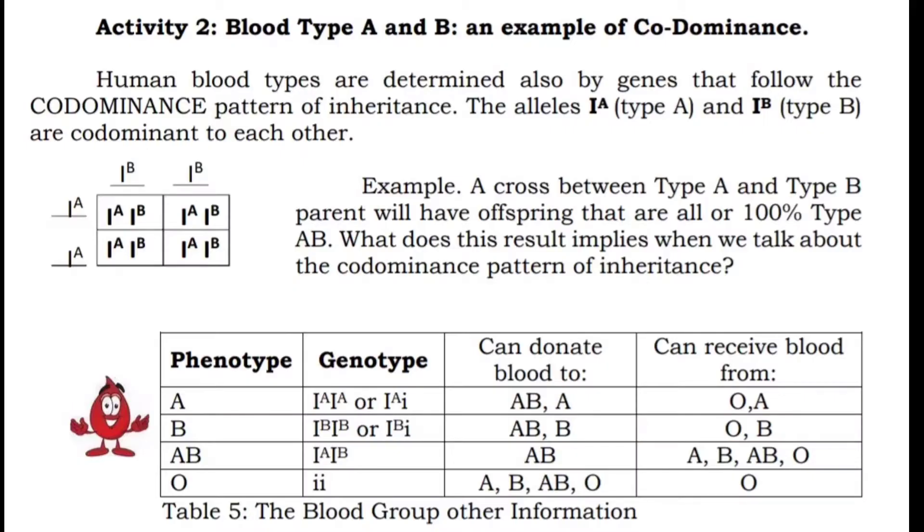The type O is the recessive human blood type. Now, if you can observe that the phenotype A and B has two types of genotypes, the homozygous and the heterozygous.